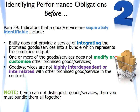The TRG discussed issues regarding the identification of performance obligations, in particular regarding when a promised good or service is separately identifiable — i.e. it is distinct in the context of a contract. The discussion informed the boards about potential diversity in stakeholders' understanding, and indicated that there was a risk of the factors being applied more broadly than intended, resulting in more promised goods or services being inappropriately combined as a single performance obligation. The IASB was initially of the view that the discussions highlighted educational needs, and that examples accompanying IFRS 15 could be clarified rather than amending the standard itself.